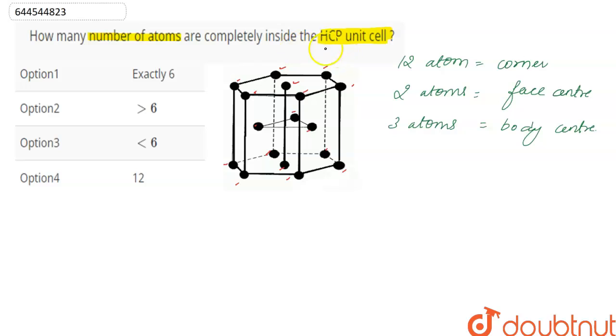Now to calculate effective number of atoms in HCP unit cell, we have total 12 atoms at every corner and the contribution of corner atoms is one by six.